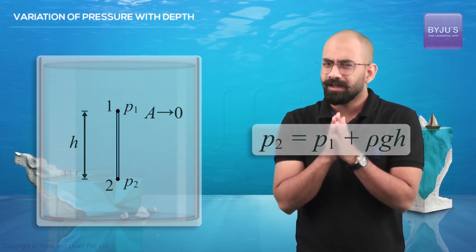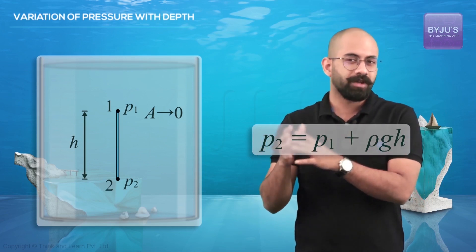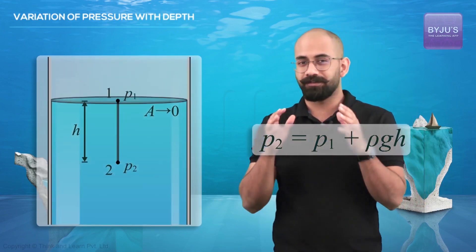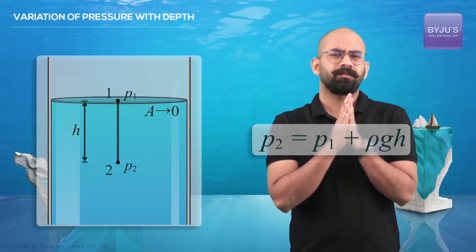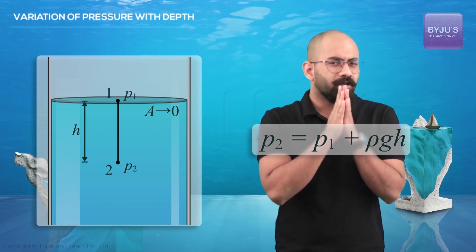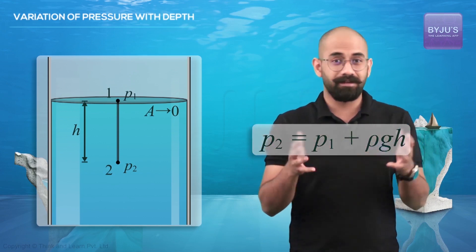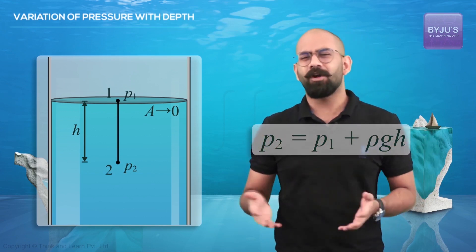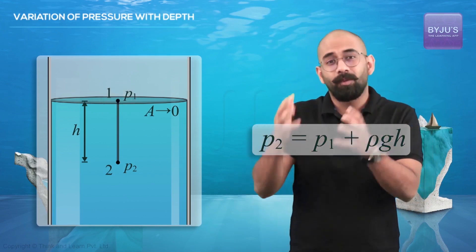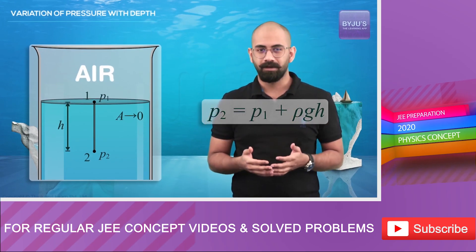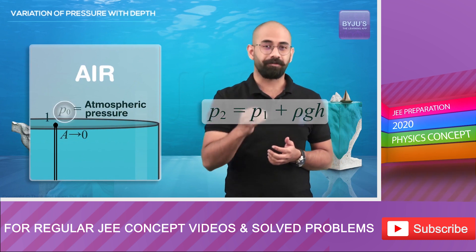So what happens if the cylinder is moved such that the top surface of the cylinder coincides with the top surface of the fluid? We've seen that a column of fluid exerts a pressure. And we also know that air is a fluid.